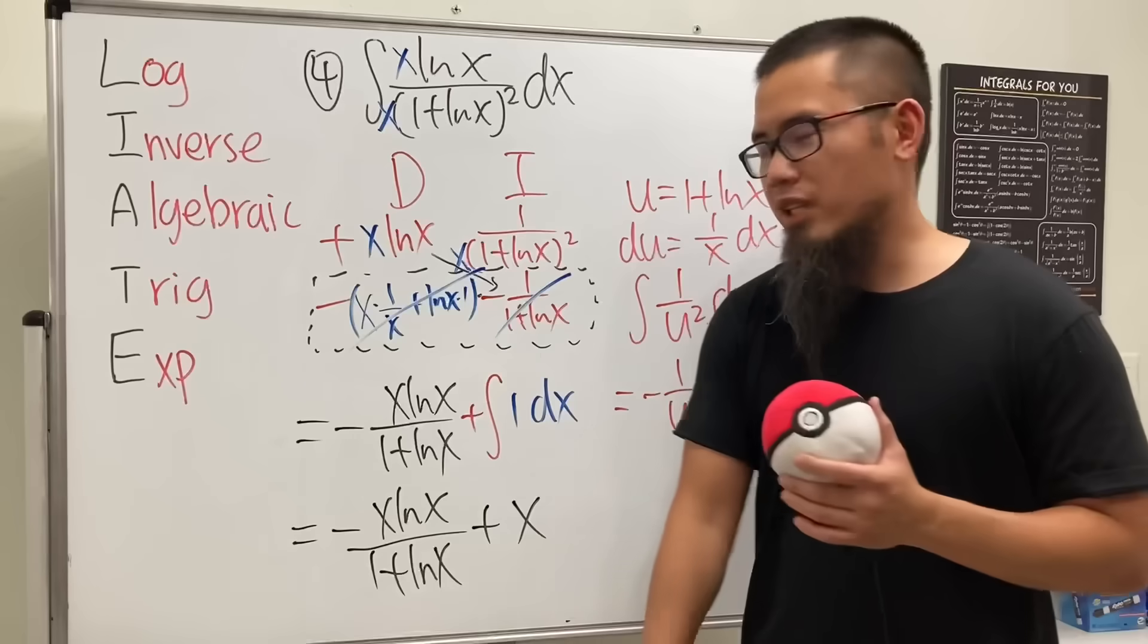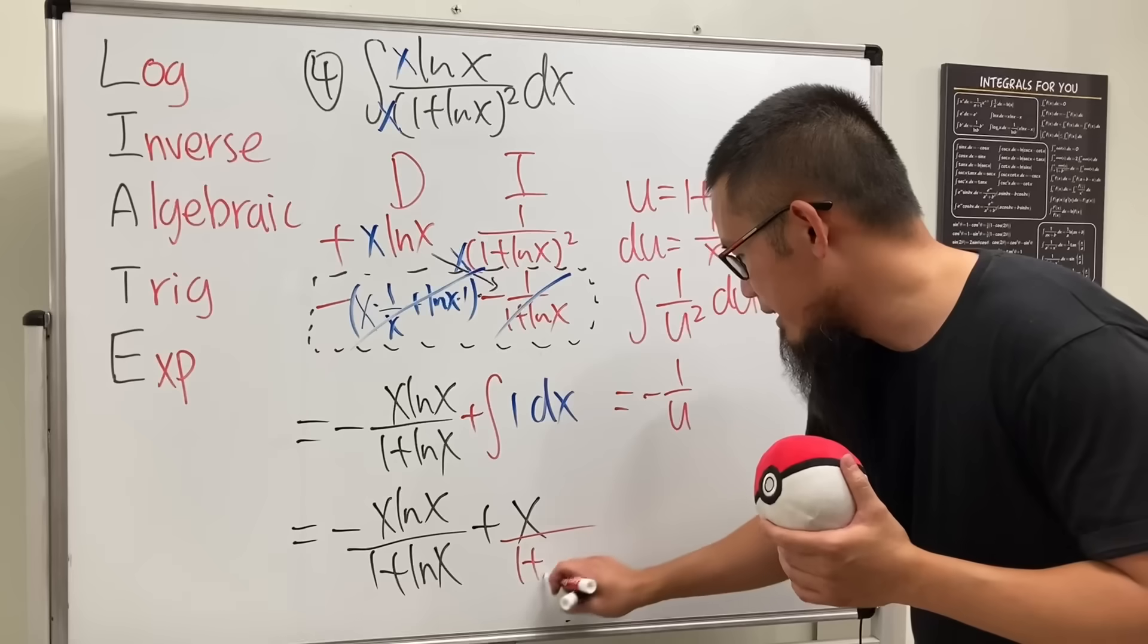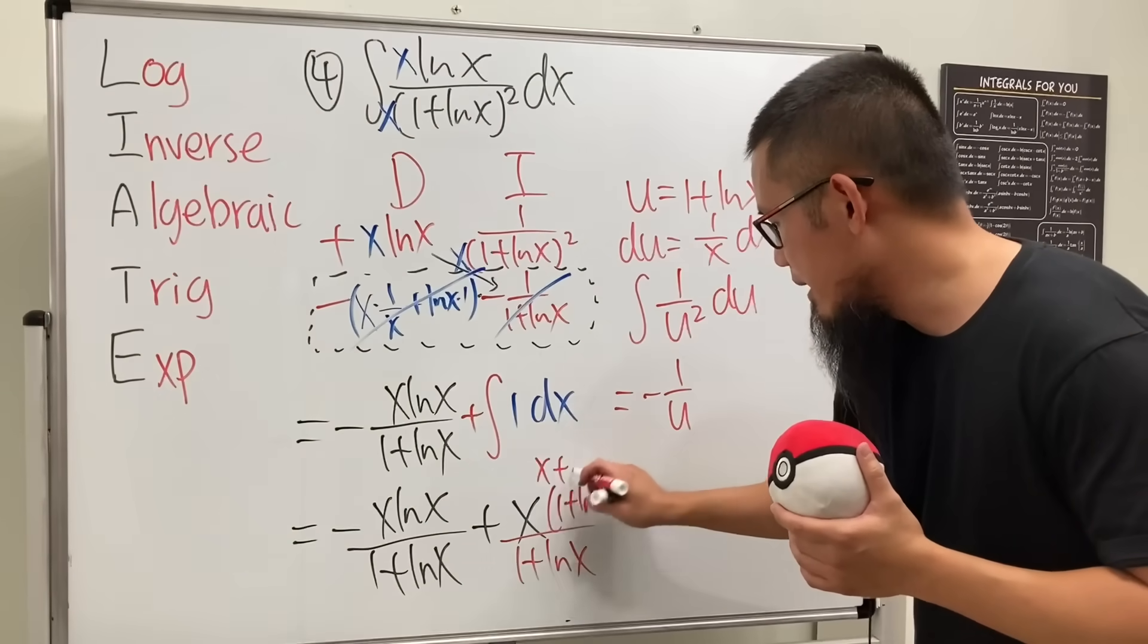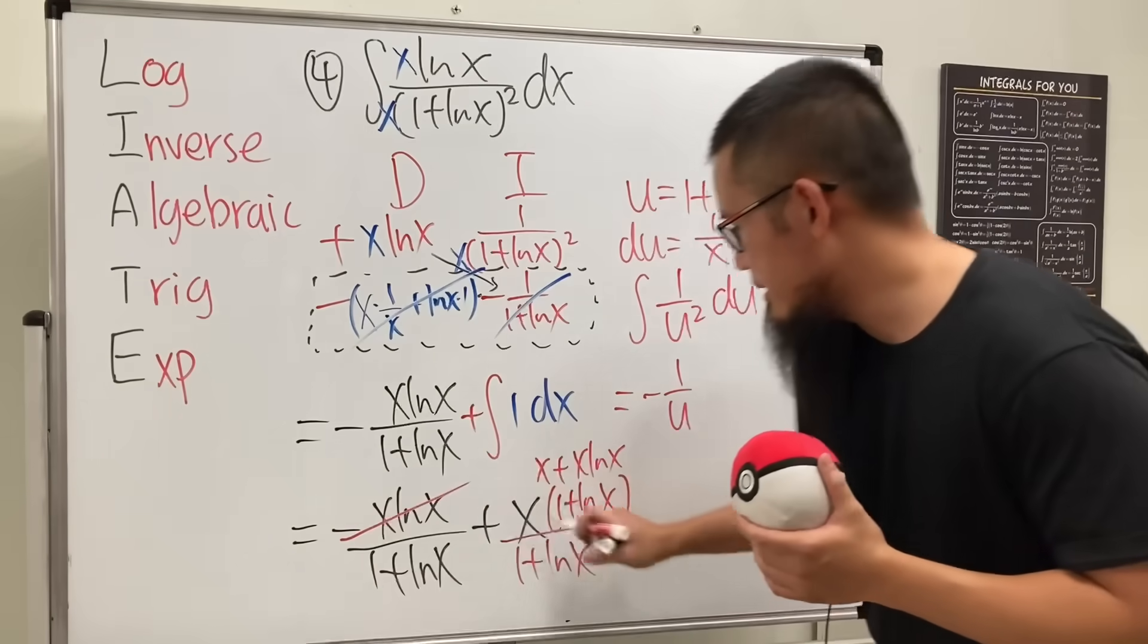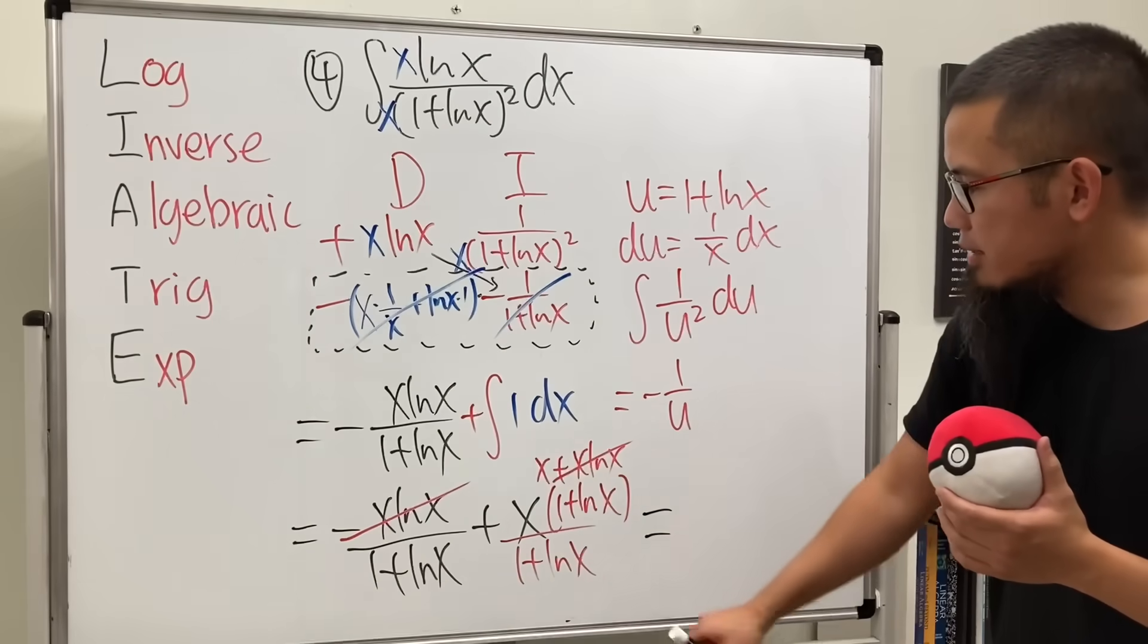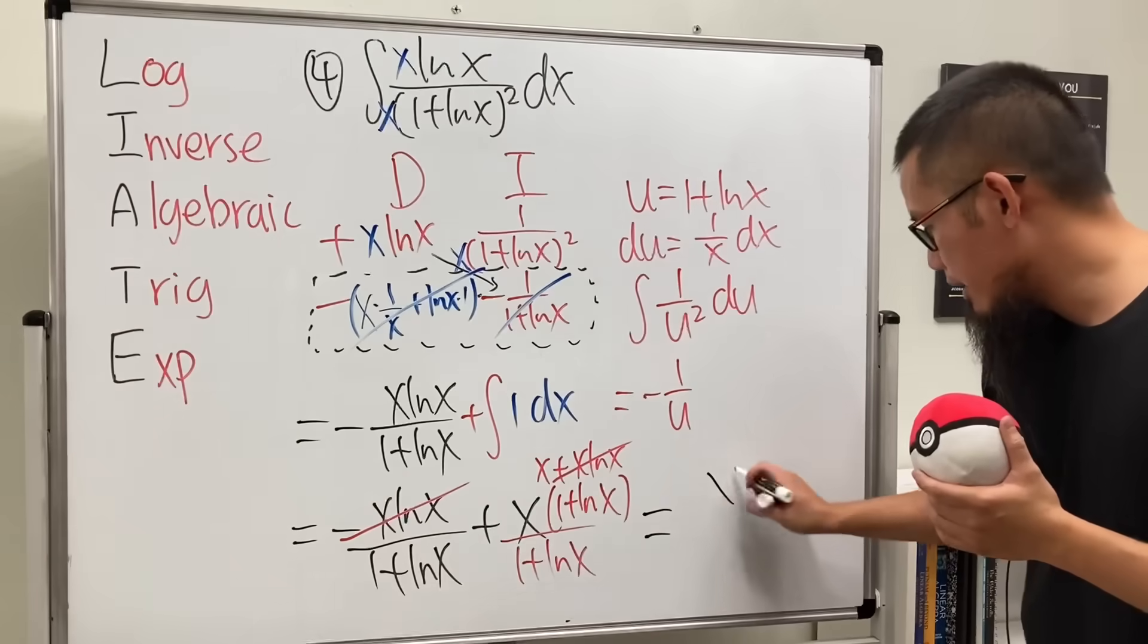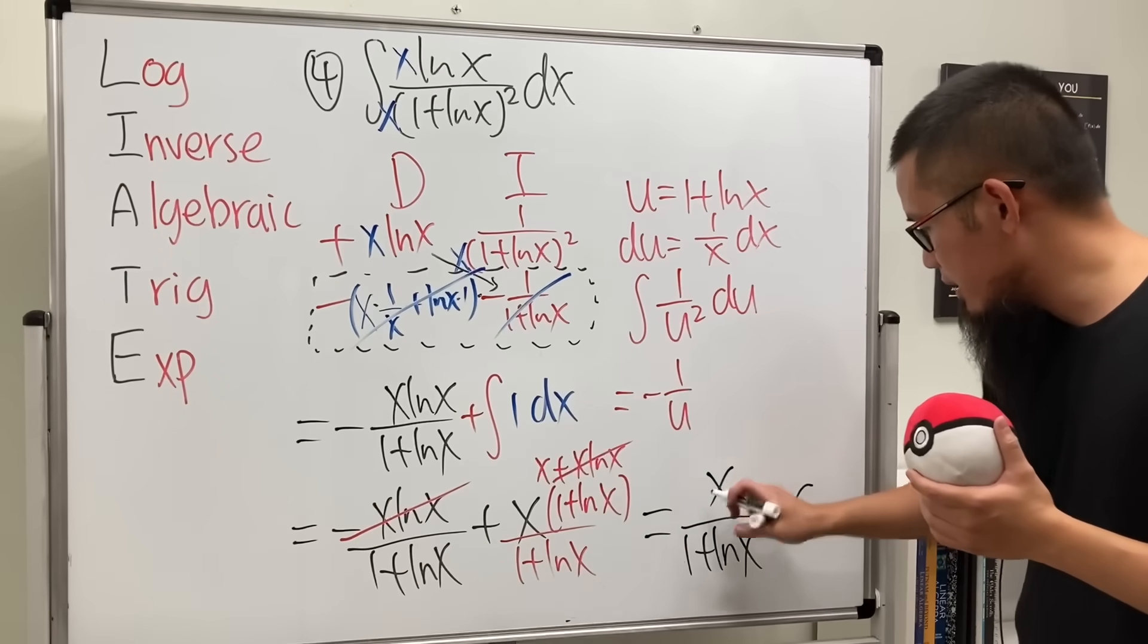But I can make it slightly prettier for you guys because this right here actually simplifies really well. Let's multiply the top and bottom by 1 plus ln x. And then you see this right here is just x plus x ln x. When we combine this and that cancel, so ladies and gentlemen, this right here actually gives us x on the top over that. x over 1 plus ln x plus C. We are done.